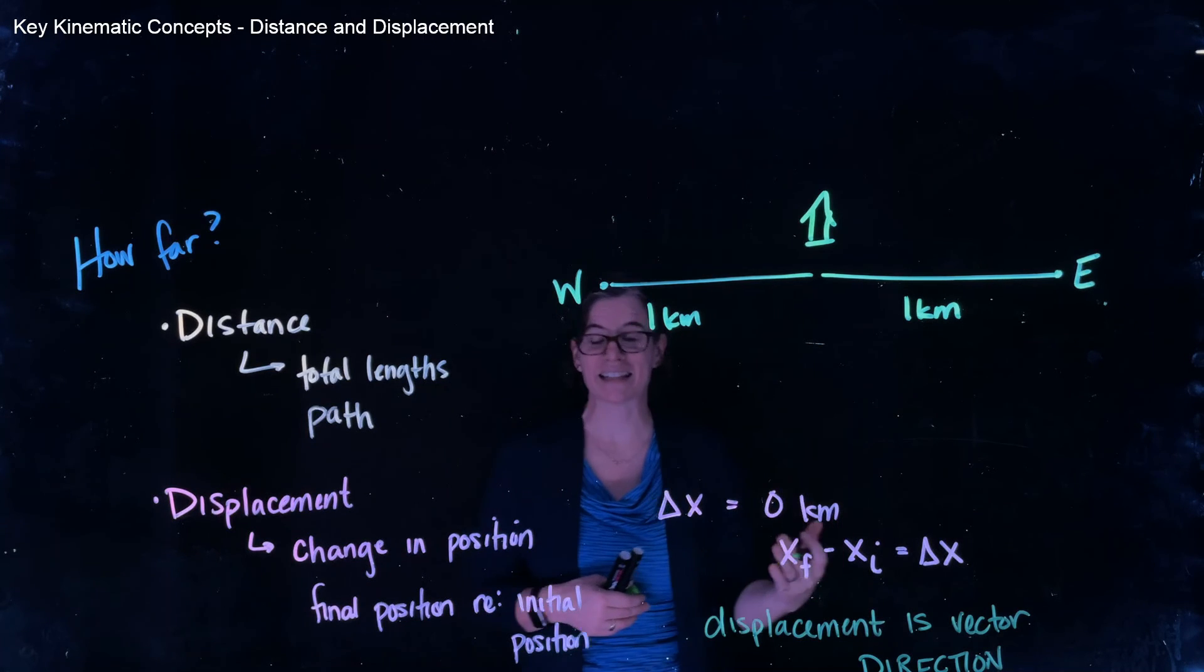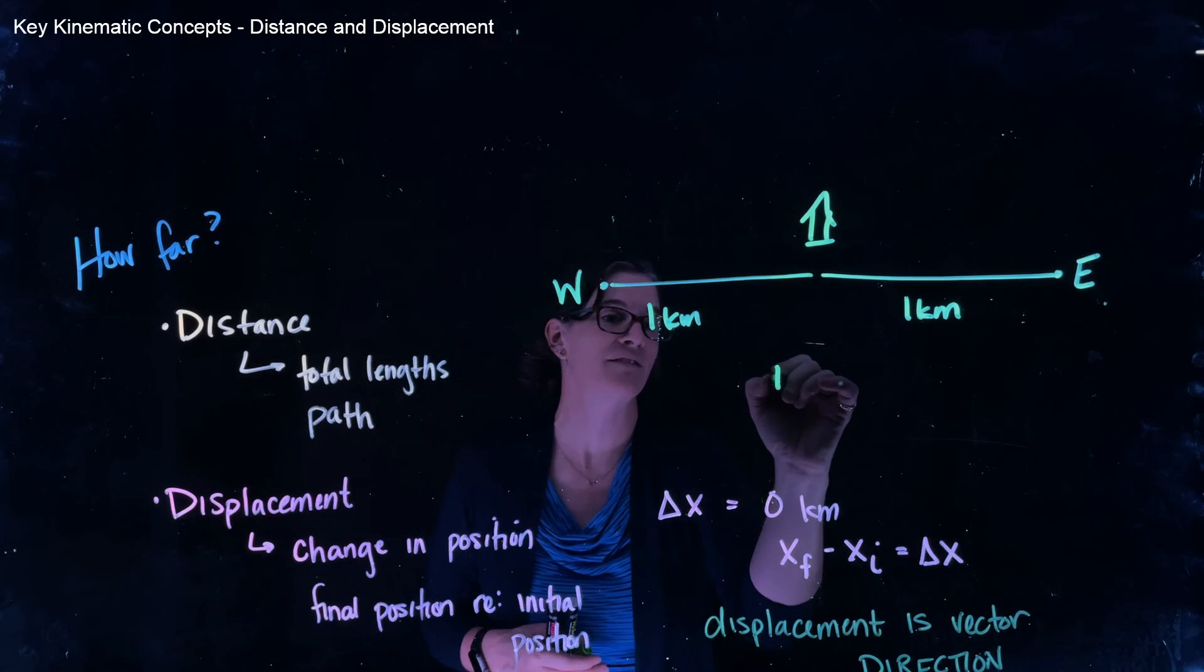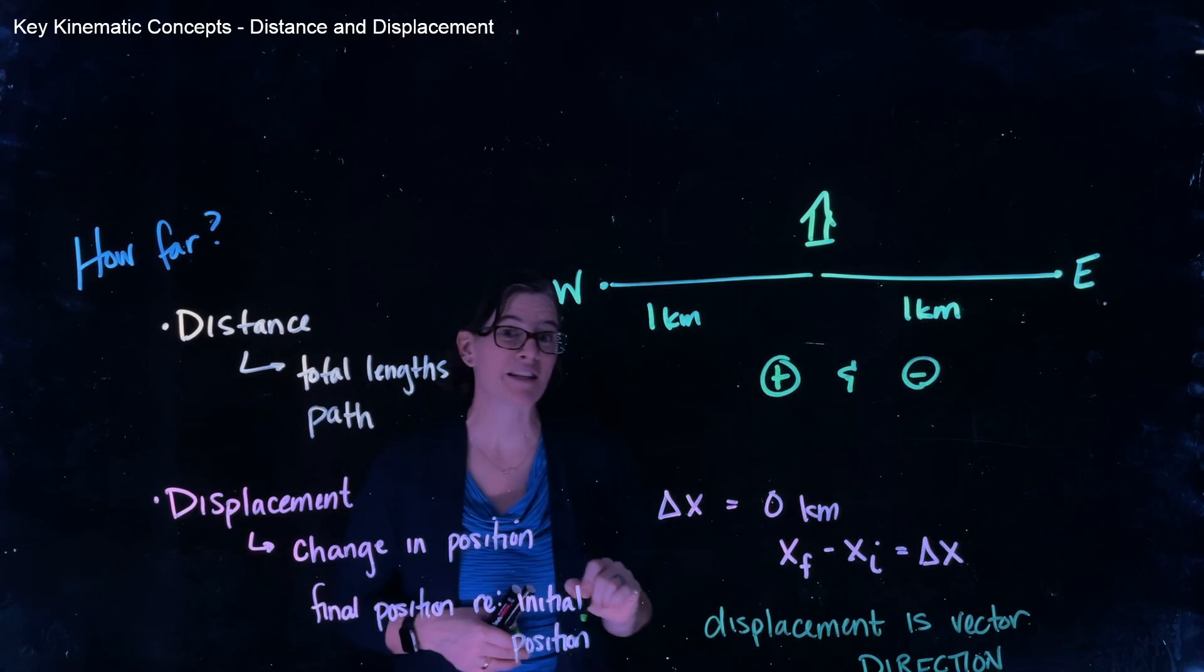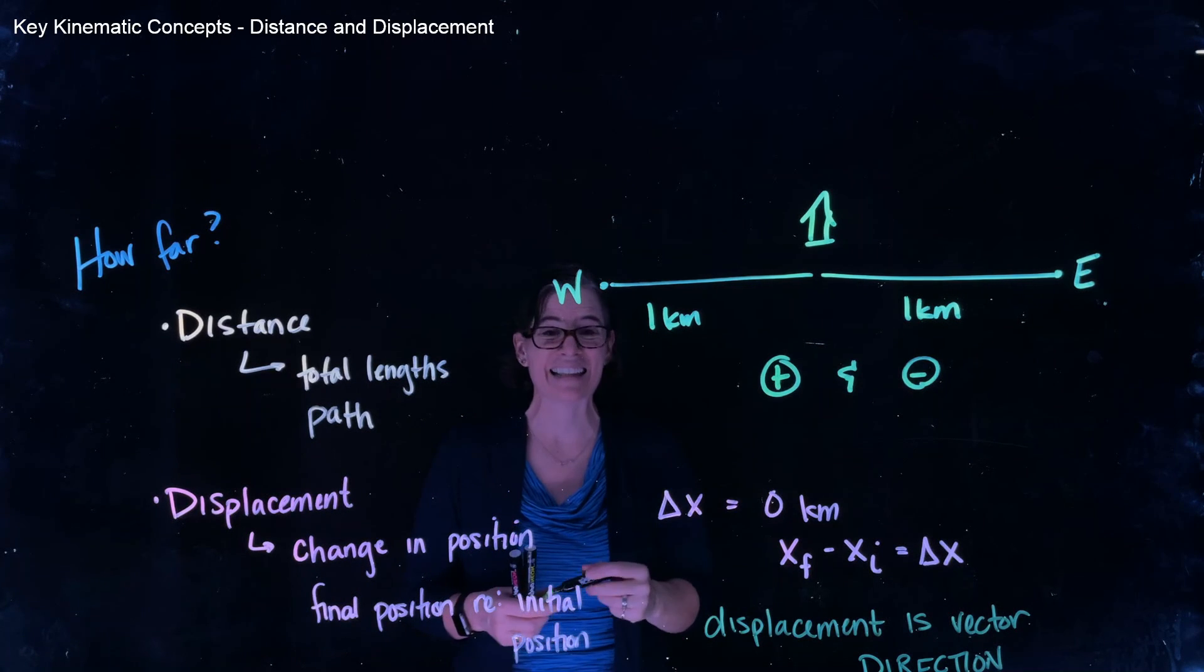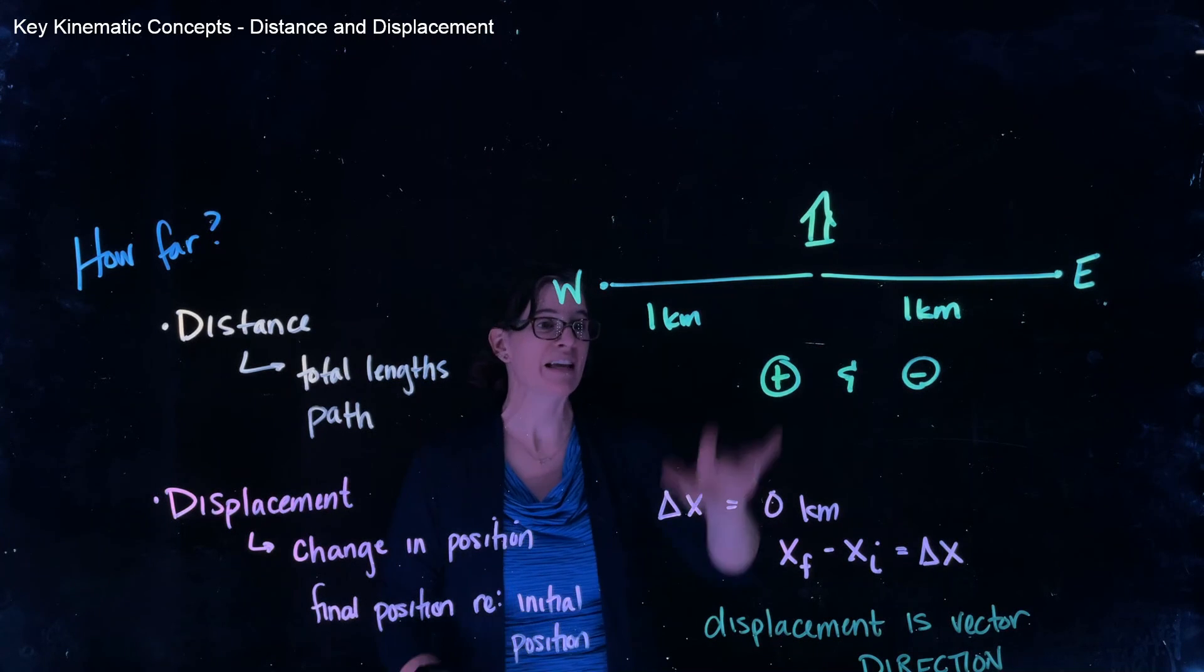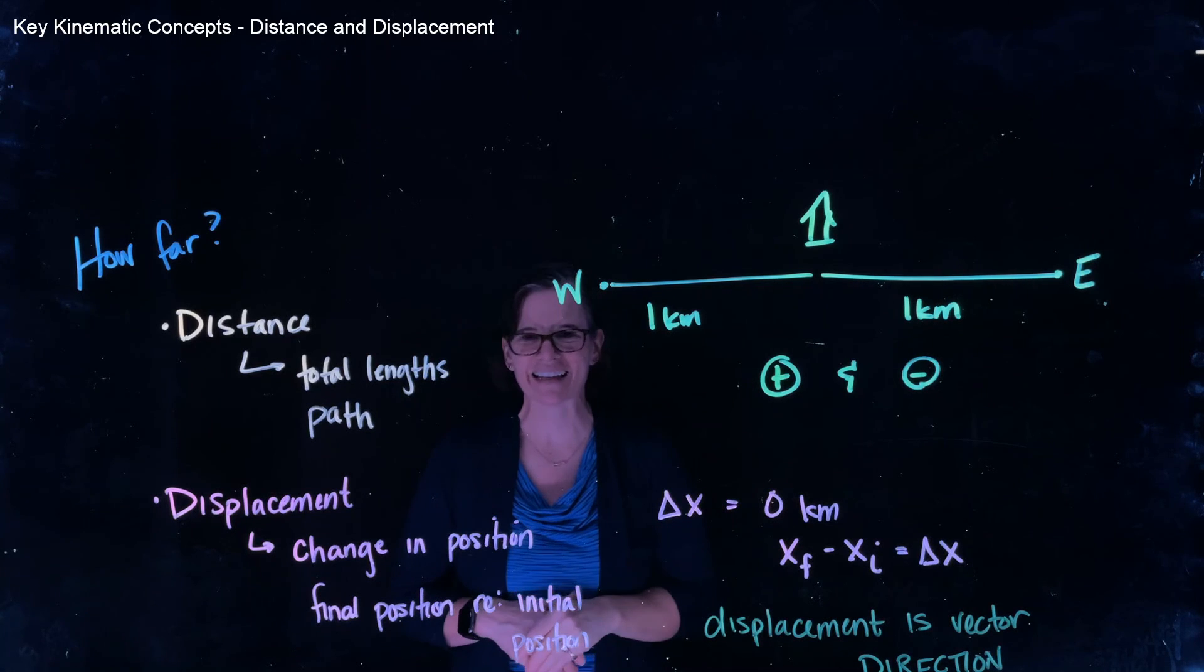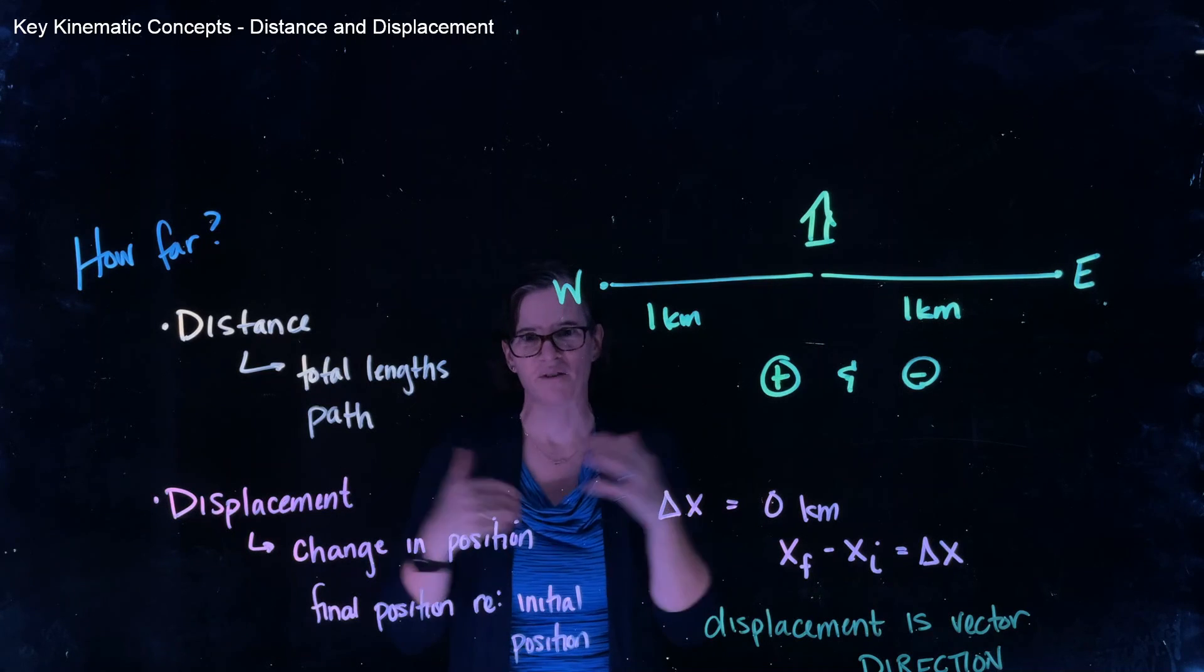Now, we often designate direction in a single dimension as a positive and a negative. So we're going to use that nomenclature as we move forward in our discussion of physics. And again, in the other mini lectures that go into this in much more detail, it's going to define for you more specifically that positive and negative. But we wanted to give just a brief overview of the questions how far.